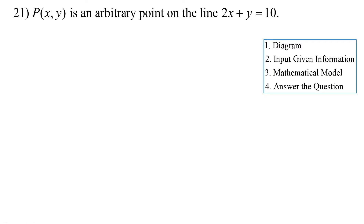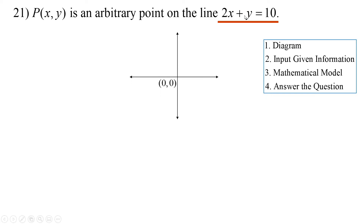Number 21: P(x,y) is an arbitrary point on the line 2x plus y equals 10. Graphing the line: y equals negative 2x plus 10, with a y-intercept of 10 and slope negative 2. Place point P somewhere on that line in quadrant 1. Express the distance D from the origin to P as a function of the x-coordinate of P.